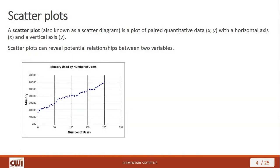When you're talking about visual representations for a data set, you've got to start with scatter plots. Also called scatter diagrams, they take plots of paired data and plot them on the standard Cartesian coordinate plane. Your ordered pair of data becomes an X and a Y that you then plot on your graph. Scatter plots are great because they can reveal potential relationships between two variables.